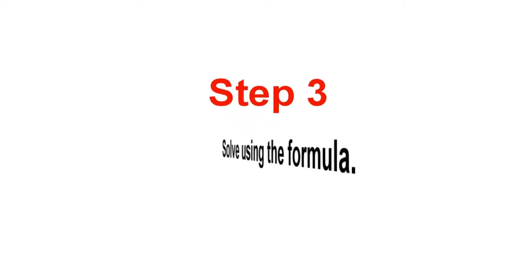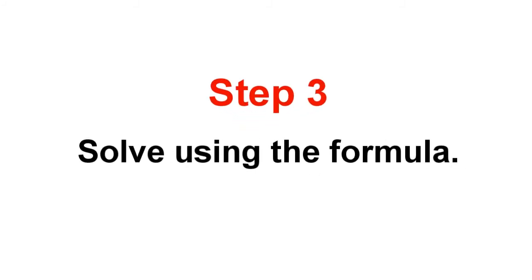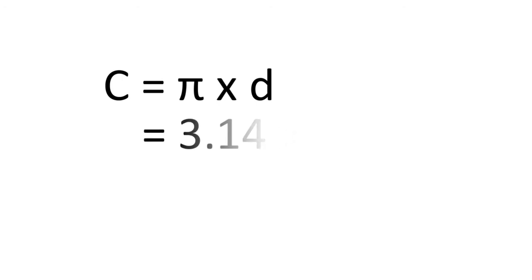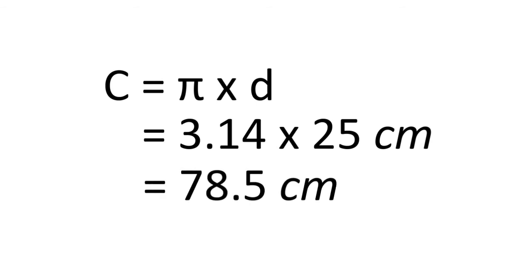Step 3: Solve using the formula. Circumference is equal to pi times the diameter. Pi is equivalent to 3.14, multiplied by the diameter which is 25 centimeters. Therefore, circumference is equal to 78.5 centimeters.